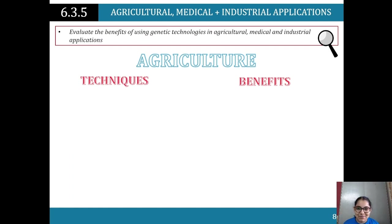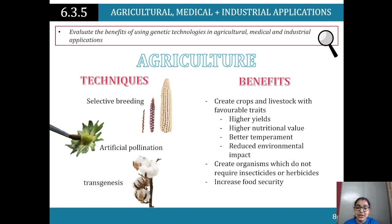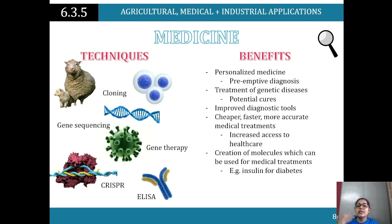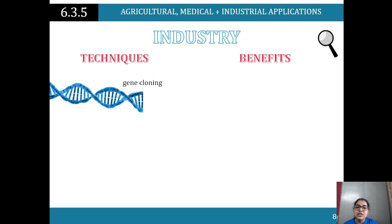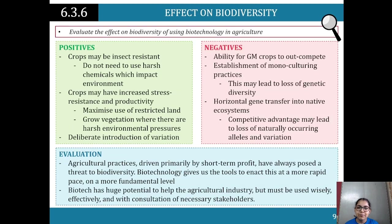In agriculture, techniques include selective breeding, artificial pollination, and transgenesis - benefits include more crops, higher yields, and improved nutritional value. In medicine, cloning, gene sequencing, and gene therapy enable personalized medicine, treatment of genetic diseases, improved diagnostic tools, and creation of molecules like insulin for diabetes. In industry, gene cloning, sequencing, and transgenesis offer benefits such as increased speed of chemical reactions, creation of organisms producing biofuels, biomaterials, and energy.